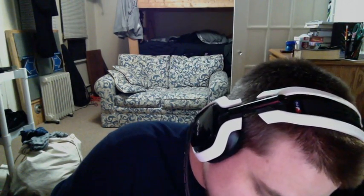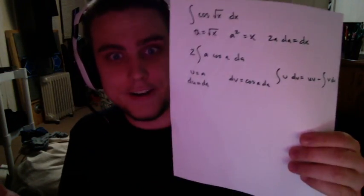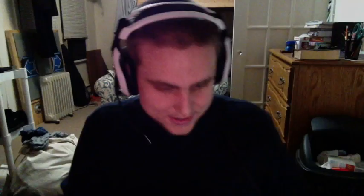So let's pick a u. An easy u would be a, because du is just da — that takes care of our other function. Now, dv has got to be cosine a, because u dv has to equal a cosine a. So if u is a, then dv has to be cosine a, which means dv is cosine a da. And since we have dv, we've got to figure out v. To find v, we integrate dv, so v equals the integral of cosine a da, which is just sine a.